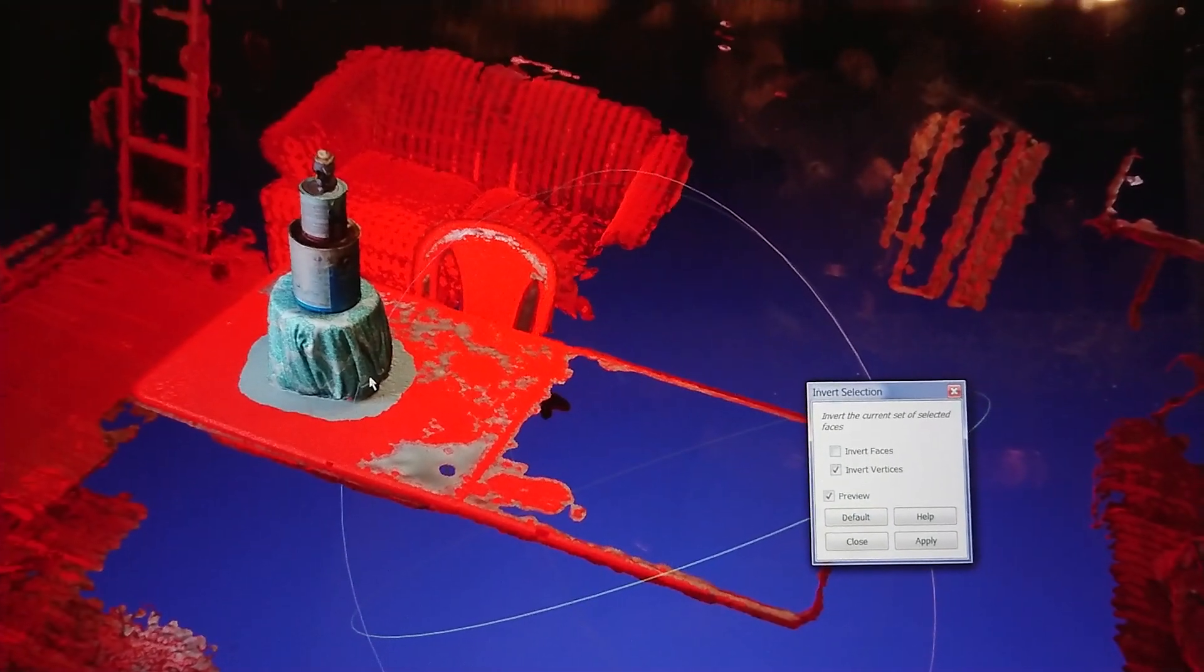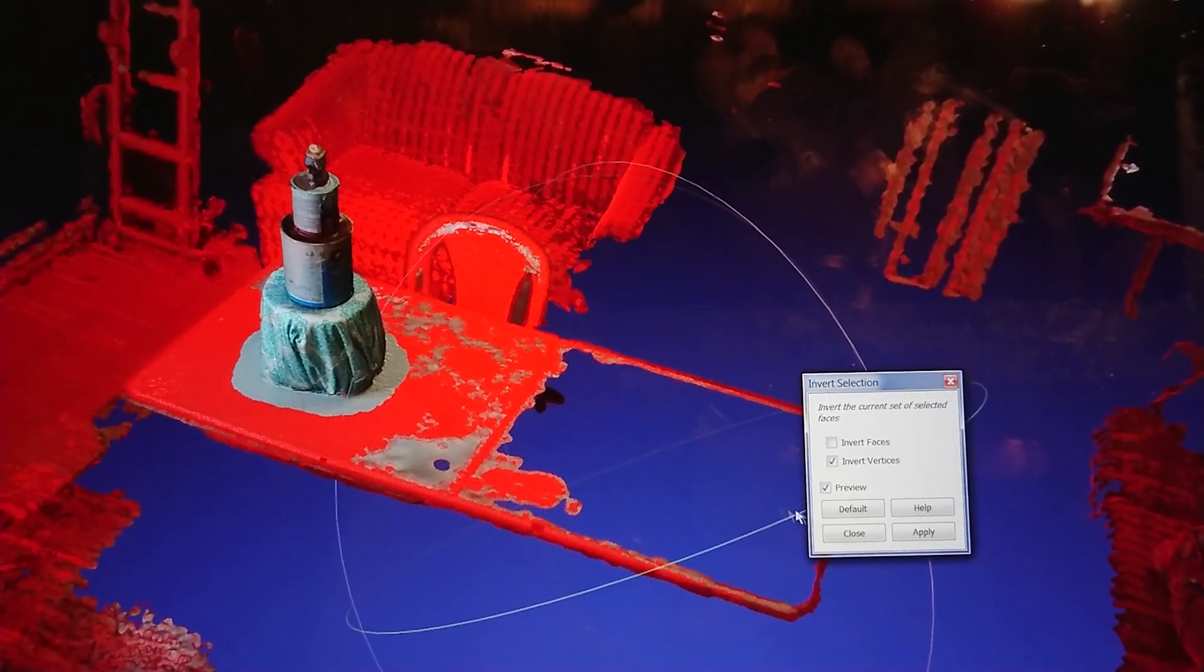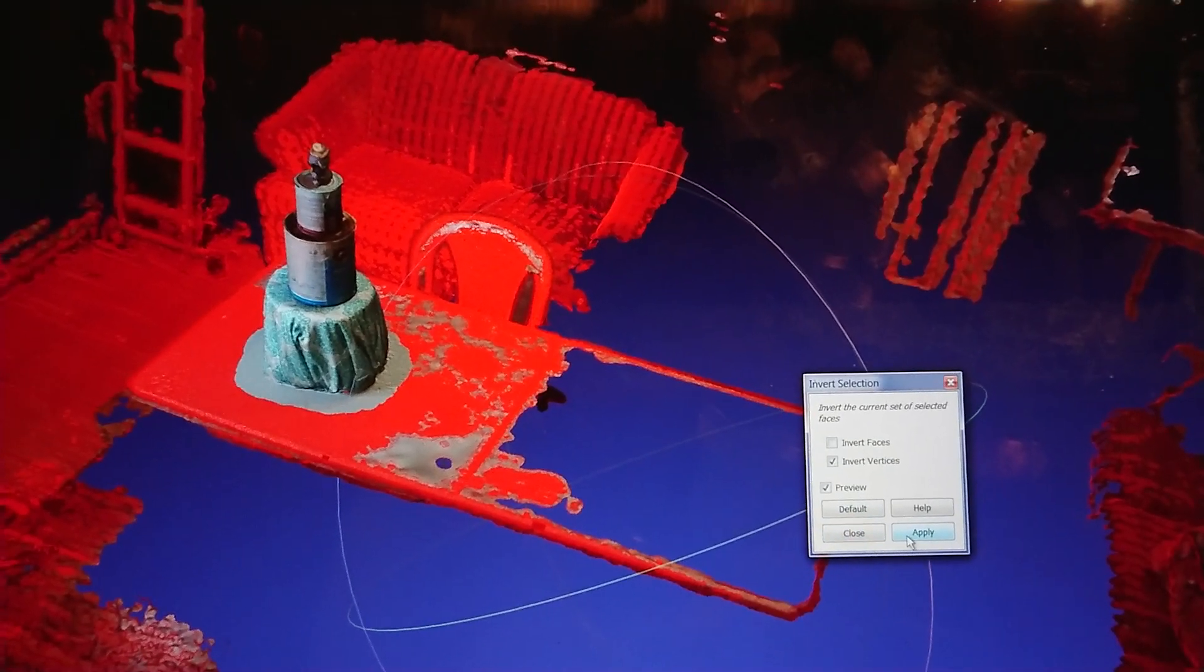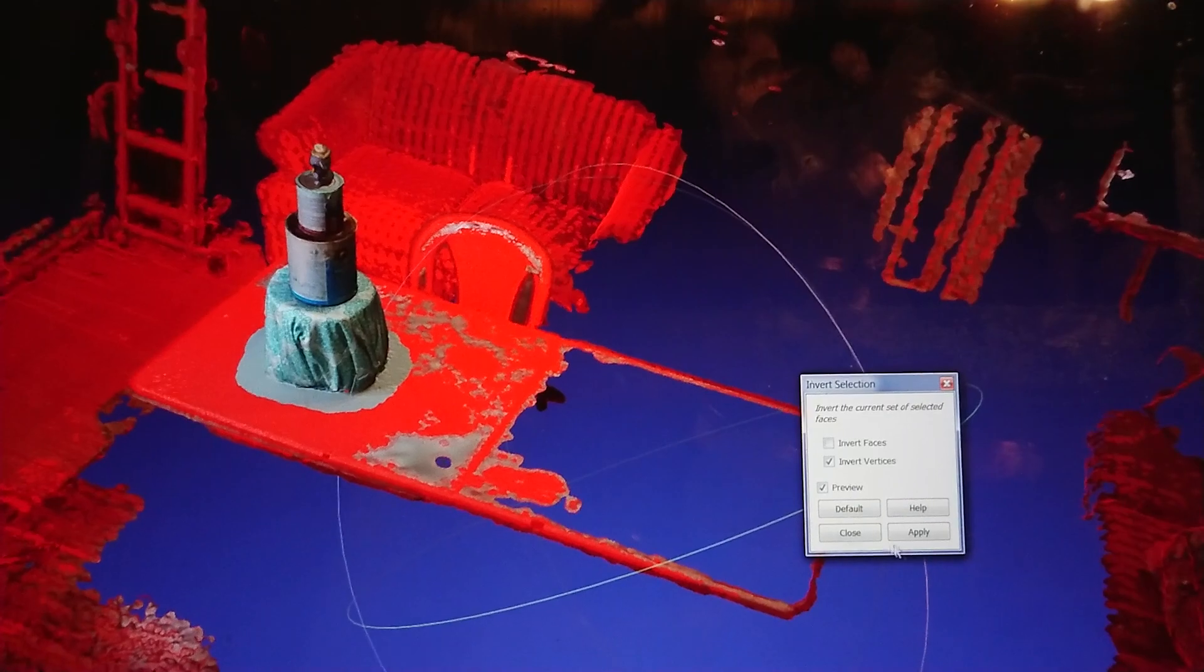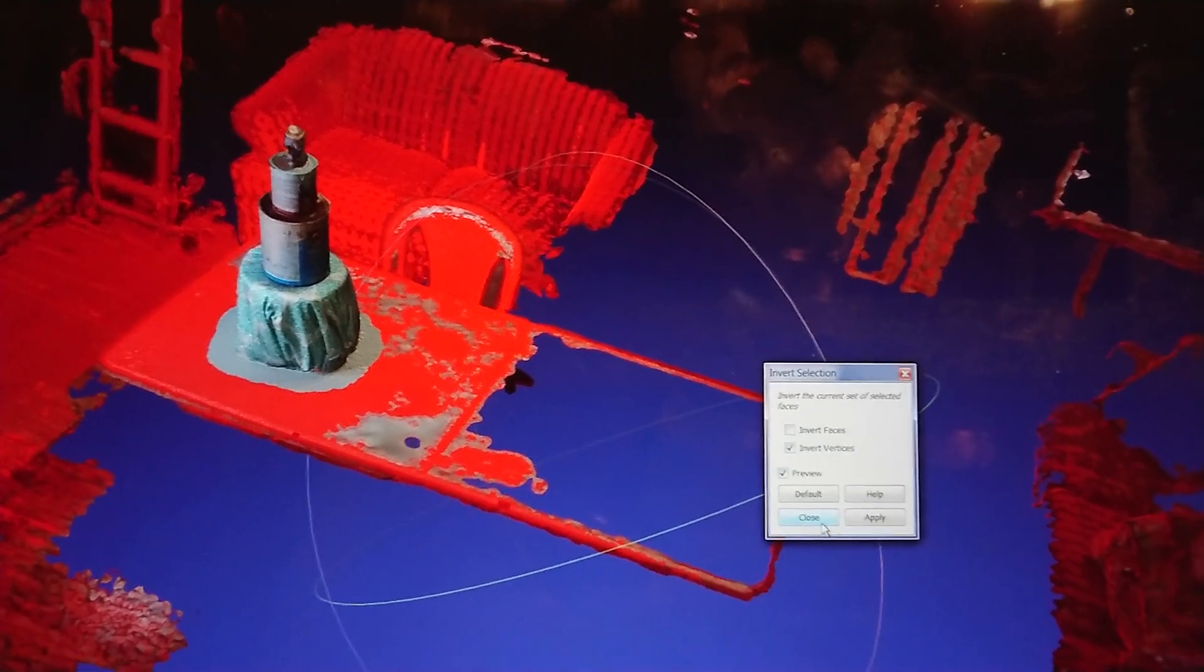So now it's getting everything that's not our choice cake. Then I have to hit apply, and it just kind of hangs out there and doesn't really seem like it necessarily did anything.